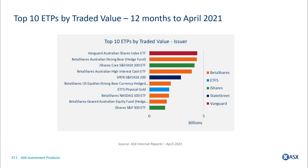By traded value, there are some common themes but also some differences. The Vanguard Australian Shares Index ETF features number one in terms of traded value. Some other interesting trends include the BetaShares Australian Strong Bear Fund and the BetaShares US Equities Strong Bear Fund featuring in the top 10, really demonstrating how investors are trading market volatility over the last 12 months. The ETF Securities Physical Gold Fund also features in the top 10 by traded value.